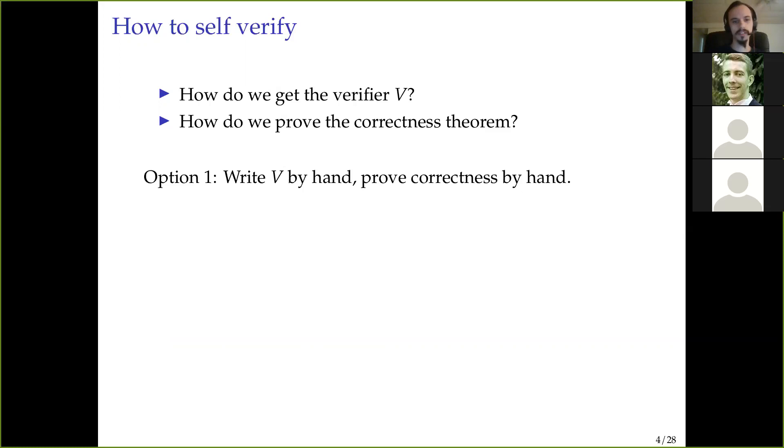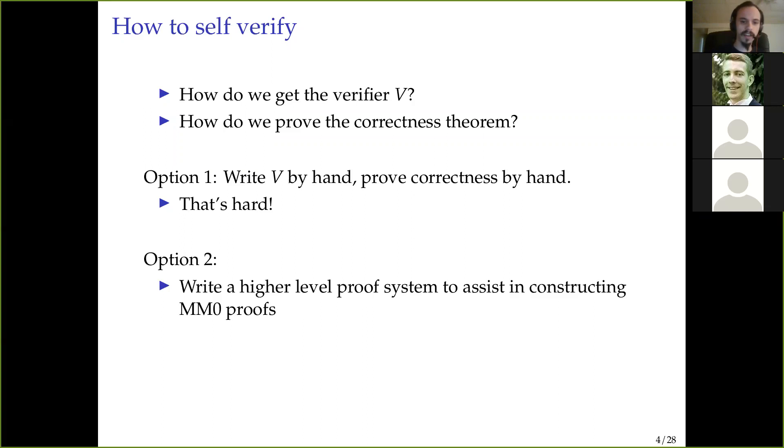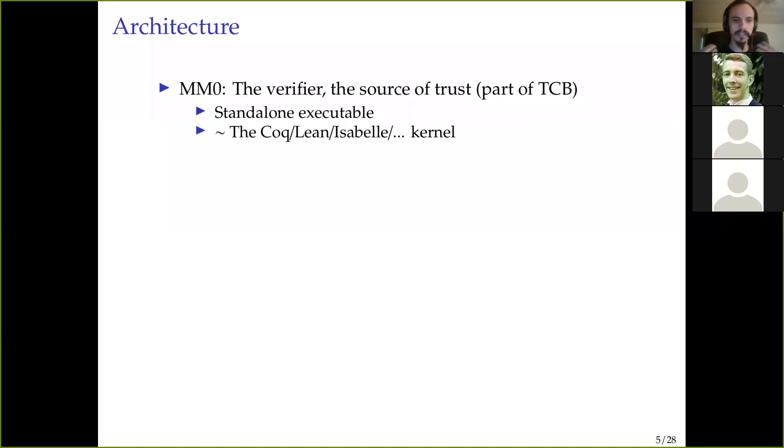Okay, so how do we get the verifier and how do we prove the correctness theorem? Option 1 would be to write v by hand. It's machine code, we'll just write down a bunch of bytes. Surely that can't be so hard. And also prove correctness of that thing. That means producing some kind of evidence that this statement is derivable. So that's pretty hard to do just from scratch.